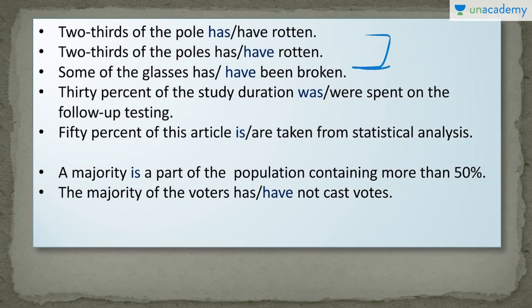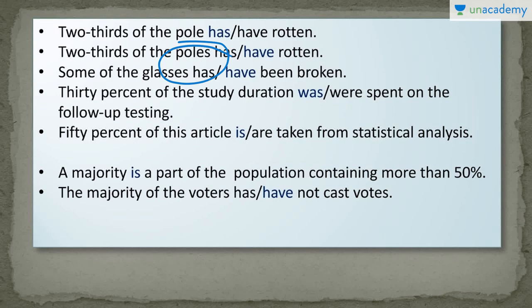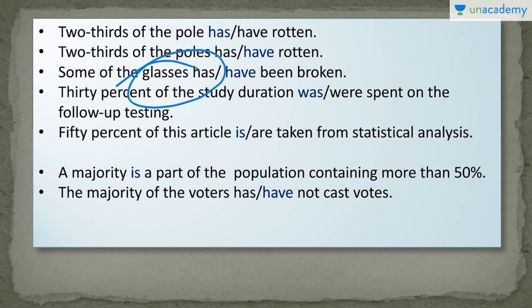These two sentences are similar — the only difference is 'pole' versus 'poles.' But this changes the meaning entirely. In the first sentence, I am talking about only one pole, and two-thirds of that one pole is rotten. In the second sentence, there are many poles and more than one pole is rotten. Next: 'Some of the glasses has or have been broken?' 'Some' is an indefinite quantity, so I consider the noun after 'of.' Here the main subject is 'glasses,' which is plural, so I choose 'have.' The correct sentence is: 'Some of the glasses have been broken.'